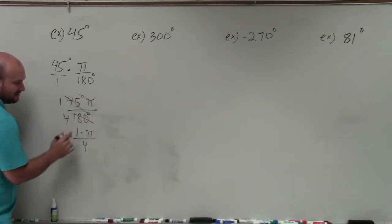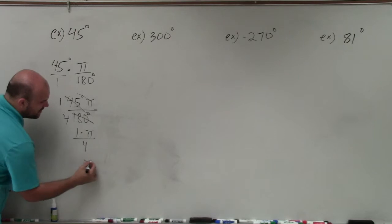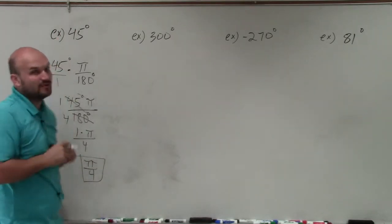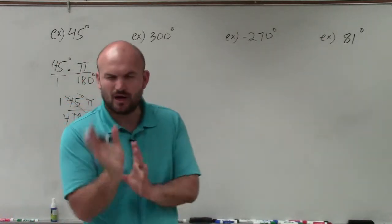Again, my degree symbols divide out. And then one times pi, I can just rewrite as pi over four. So that would be my radian measure, which is equivalent to 45 degrees. Now, for the next couple of problems, I'll work a little bit quicker.